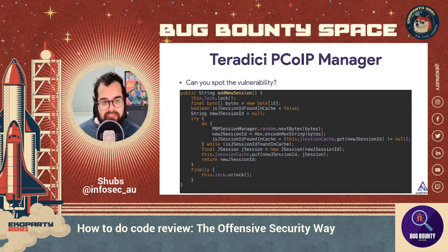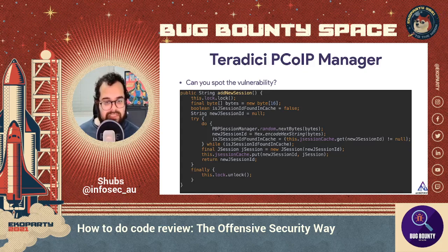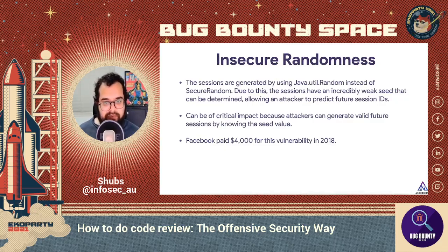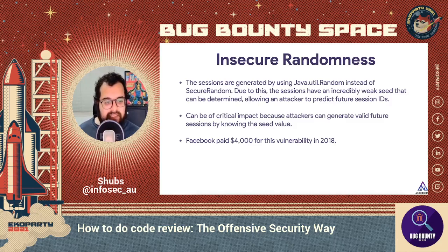This wouldn't have been super obvious if you just looked at the source code without much knowledge about Java or how java.util.Random works — which is why it's really important to have a good base understanding of each programming language you're auditing. The sessions were generated using java.util.Random instead of SecureRandom, giving the sessions an incredibly weak seed that can be determined, allowing an attacker to predict future session IDs. This can be of critical impact. Facebook paid four thousand dollars for this vulnerability in 2018.